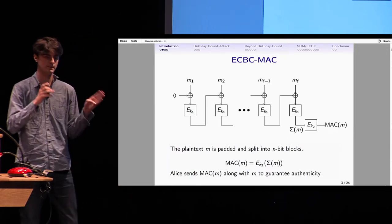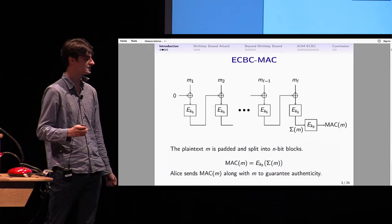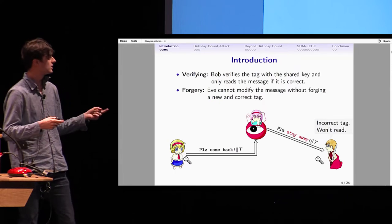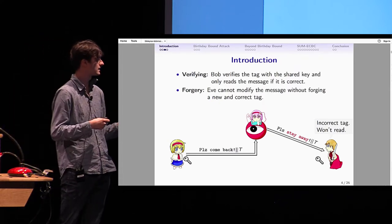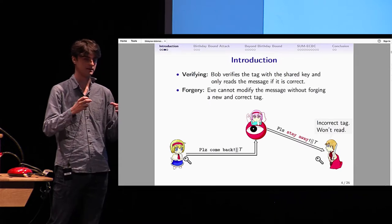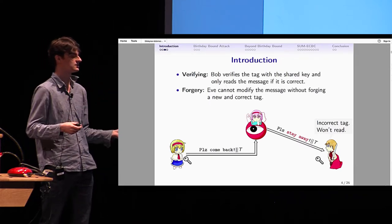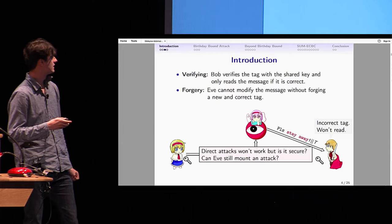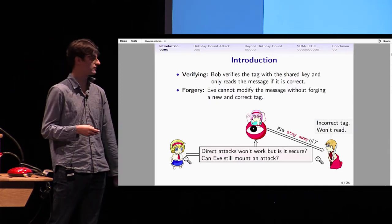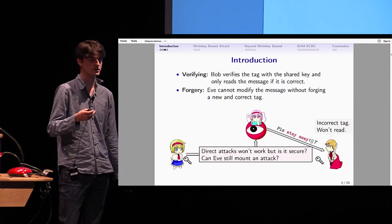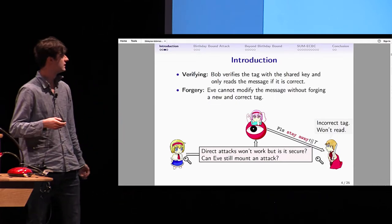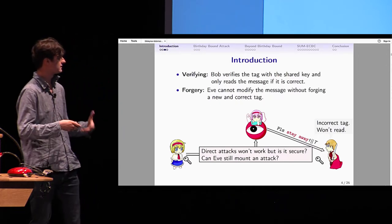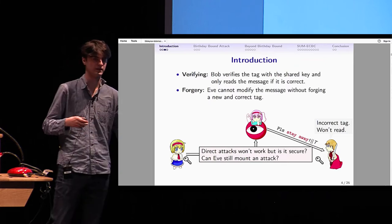Alice simply appends the MAC to her message. That way, if Eve tries to modify the message, Bob, who also has the key, can compute the MAC again and verify that it matches the tag he received. If it doesn't match, he won't read the message. That way, you avoid direct modification of the plaintext. But the question we ask is, is this secure? Can Eve still do forgeries and modify the tag?